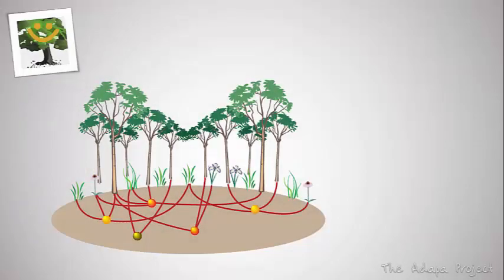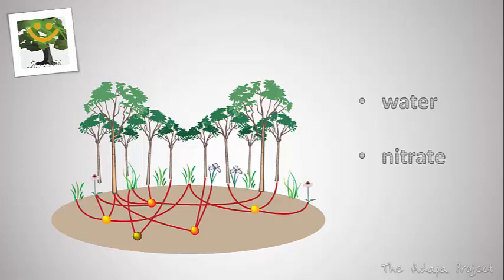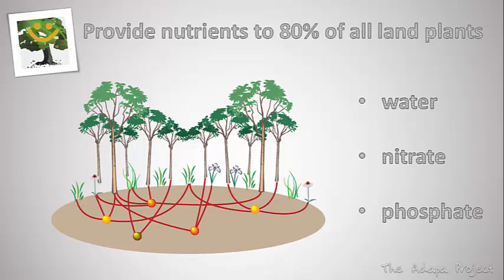Mutualistic fungi are important to terrestrial ecosystems because they provide nutrients in the form of water, nitrate and phosphate compounds to 80% of all land plants. Without mycorrhizal fungi, most plants could not survive in nature.